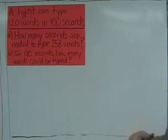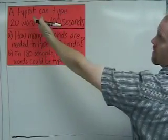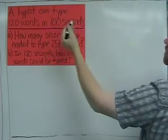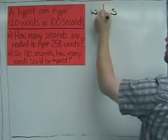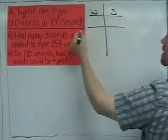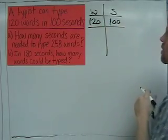To solve this problem, I begin by making a ratio table. And we see that a typist can type 120 words in 100 seconds. So I write words and seconds, and I'm going to make a nice little table. 120 words, 100 seconds.